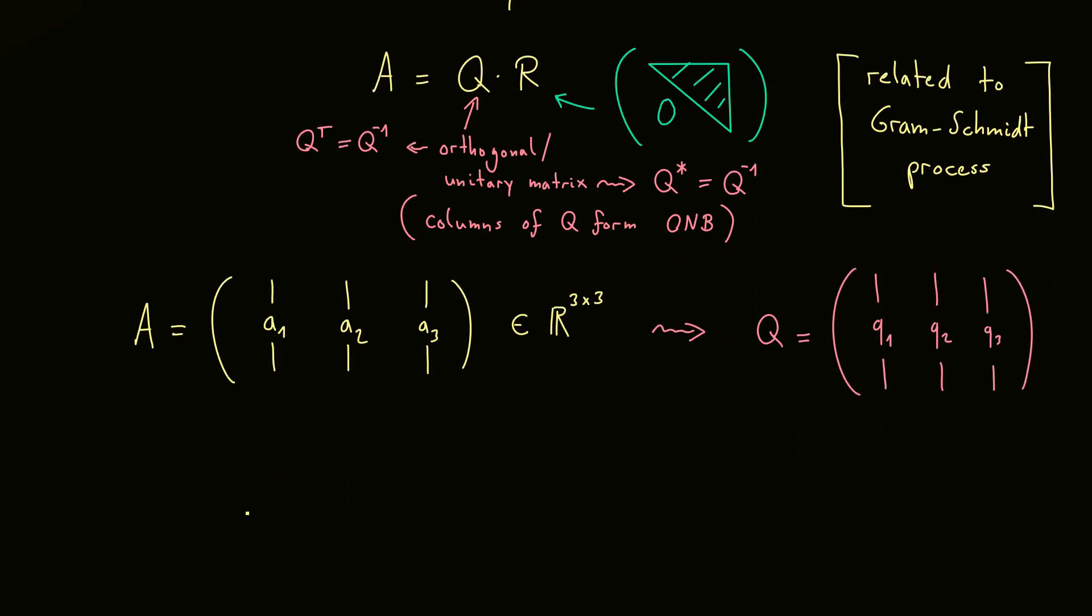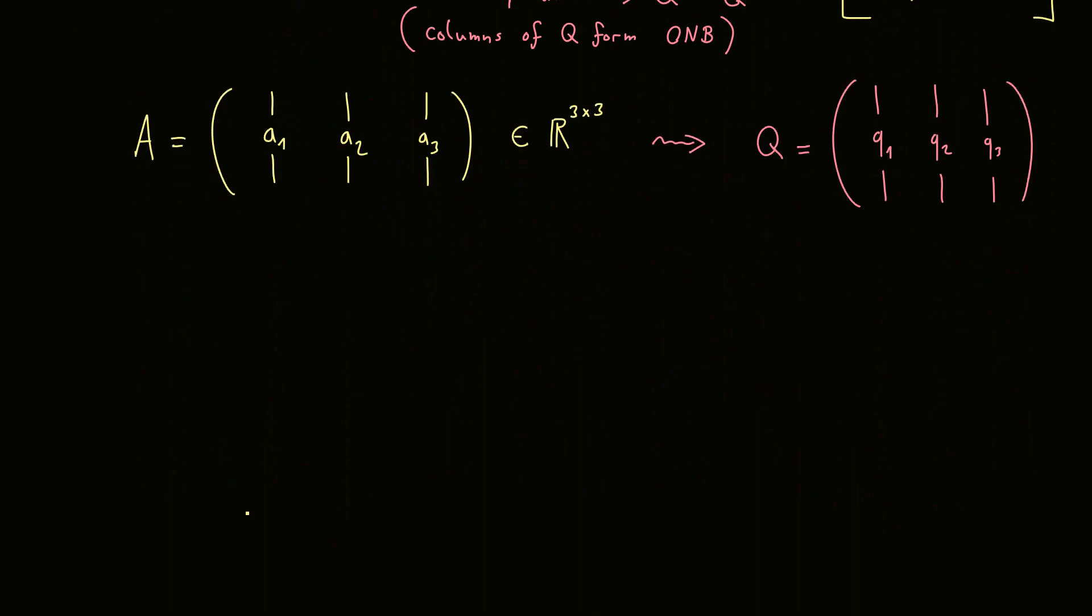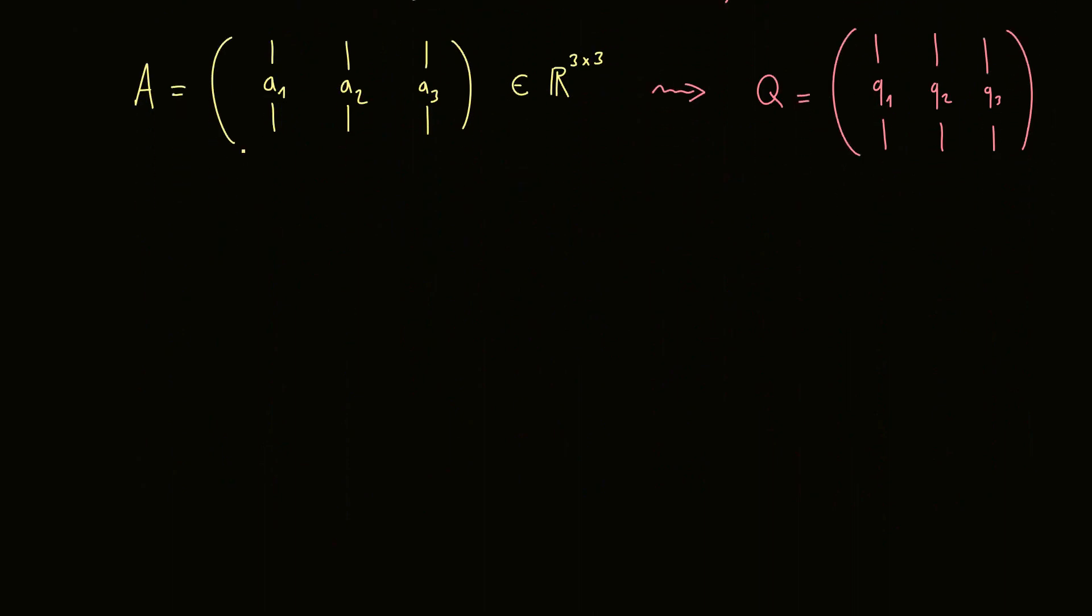Because all these columns should have length 1, we start by normalizing the first vector here. This gives us now the definition for Q1, which should be our vector A1 divided by the length of the vector, so the norm of A1. So you see calculating Q1 is always easy, but for Q2 we have to do a little bit more.